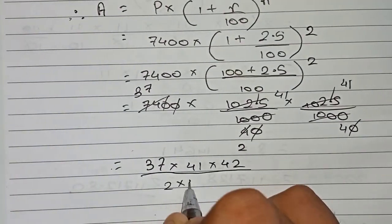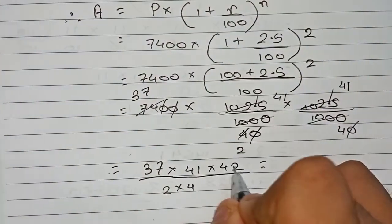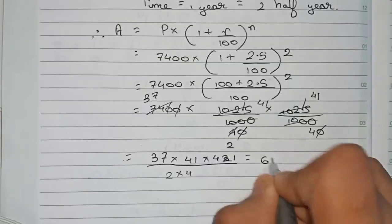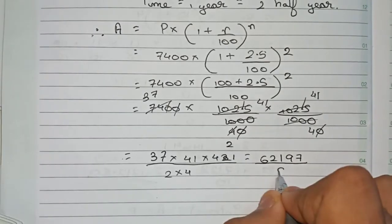37 × 41 × 41 equals 62197. 2 × 4 equals 8. So it becomes 62197 divided by 8.